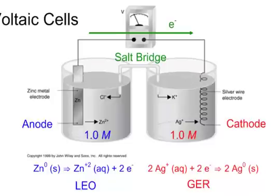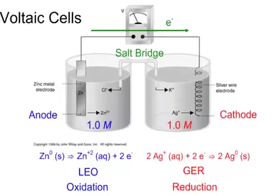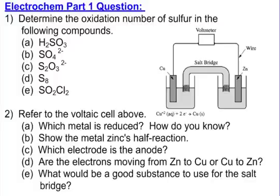So that's it for the knowledge in electrochemistry. And now we have the questions that you're going to have to answer. Number one is determine the oxidation number of sulfur in the following compounds. We have five different compounds. You have to determine the oxidation number. Very easy.